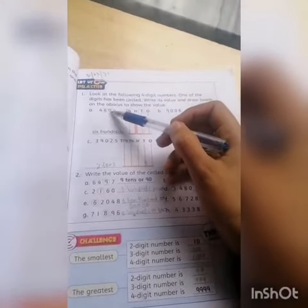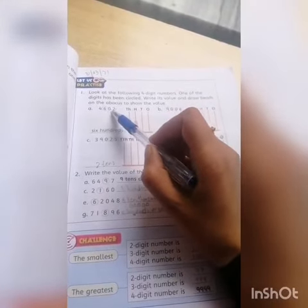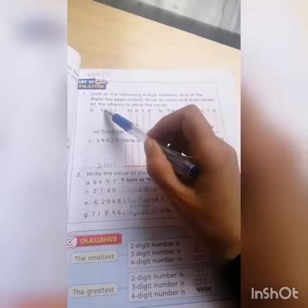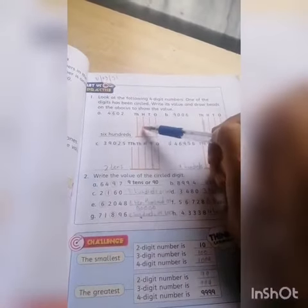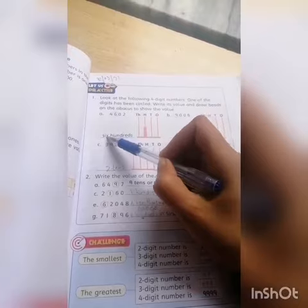Question number one is unit, ten, hundred, thousand. Four thousand six hundred and two. You have the circled digit, you have to count it. Unit, ten, hundred. Here you have six beads drawn in hundred. You have to write the value: six hundred.